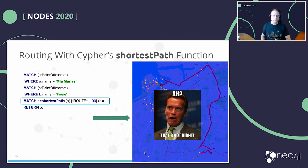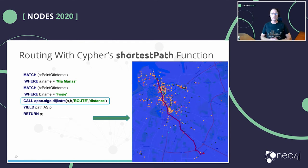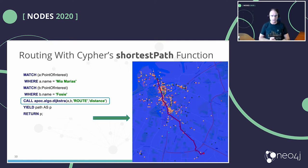If instead we use a different algorithm — the Dijkstra algorithm — and tell it to follow route relationships weighted by distance, it finds the shortest path by distance and gives a much, much better path. This is a massive optimization that makes routing much more useful.